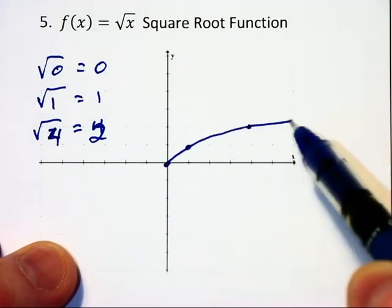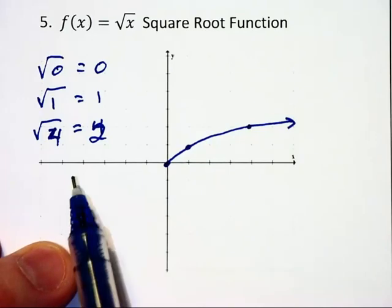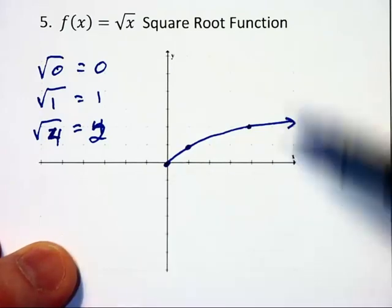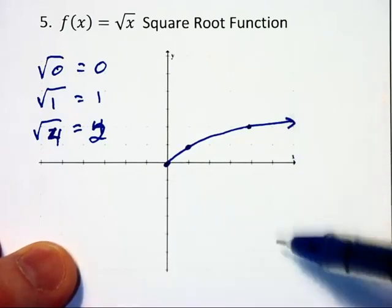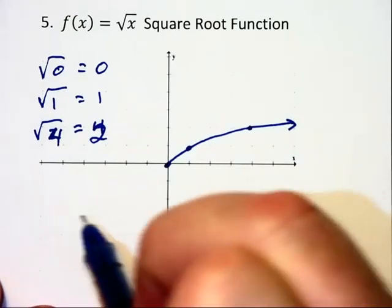And we get a sideways half parabola. There can never be a negative value input into the square root. And the square root must always be positive so we can't have anything down below the x-axis.